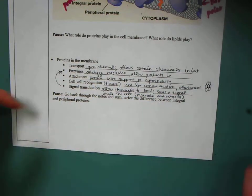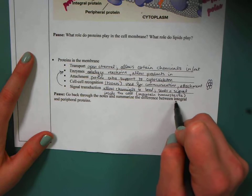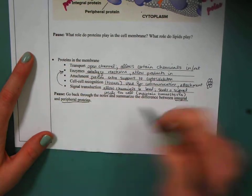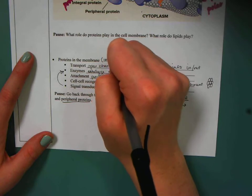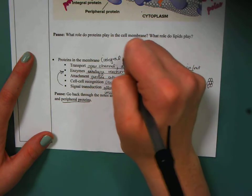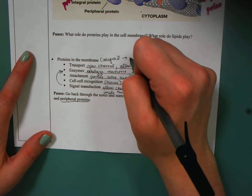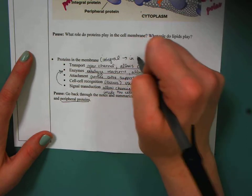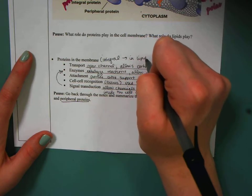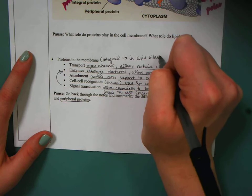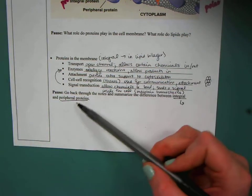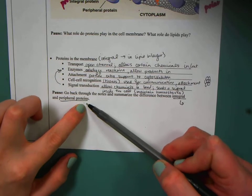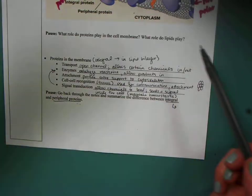Okay, so lots of different proteins. The question down here, it says integral and peripheral proteins. Essentially, these are all integral. They're all in the lipid bilayer. So go ahead and contrast their role with the peripheral proteins, proteins that are inside of the cell.